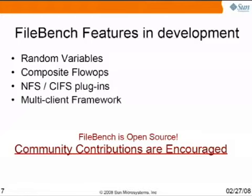We are also adding some new features: a thing called random variables, where each time you access the variable, you get a different value from a random distribution that you can define. And composite flows, which are essentially adding some scripting capability to FileBench. Both of those are working as prototypes and will be released soon. We have people working on NFS plug-ins as well. And finally, we're investigating multi-client frameworks in order to have more than one client feeding a server, since right now FileBench is limited to a single client.